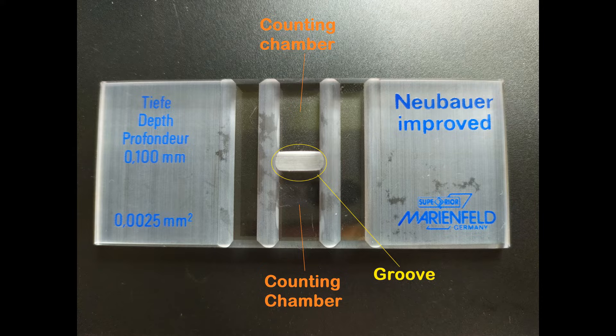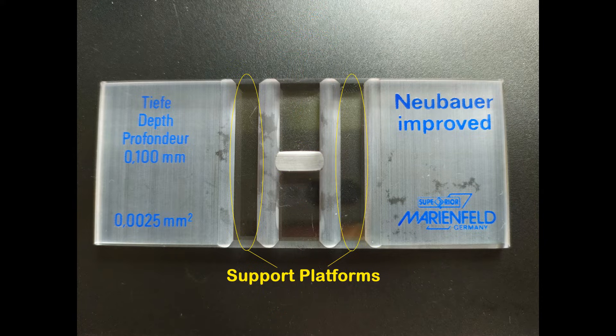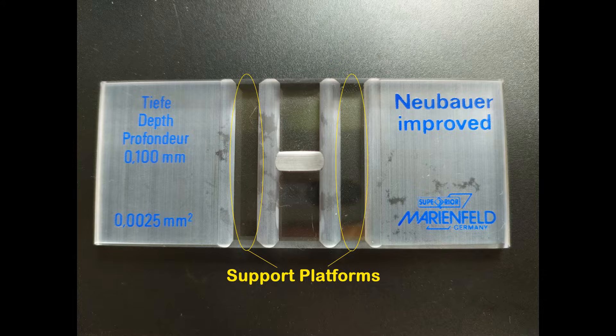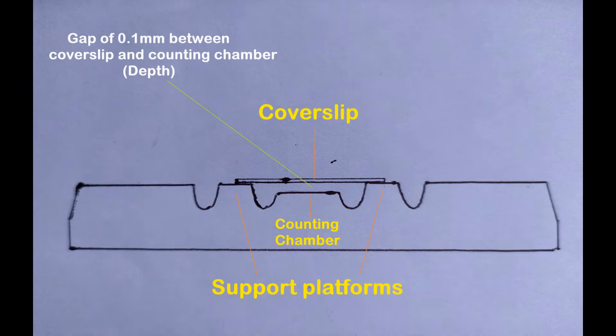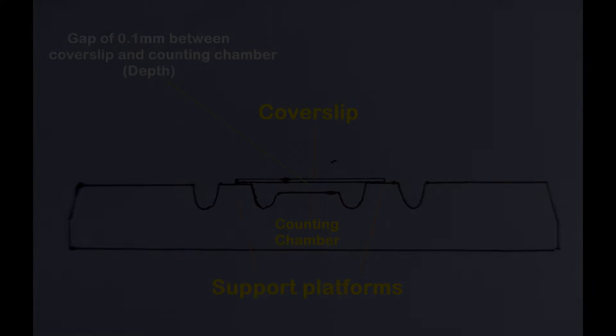On either sides of the two chambers are found two platforms which function to support the coverslip when loading a sample onto the counting chambers. The height of the platforms and the chambers are designed in such a way that, when a coverslip is placed on top, there is a gap of 0.1 mm between the coverslip and the chambers. This is known as the depth of the counting chambers.